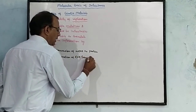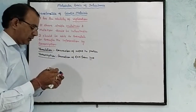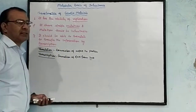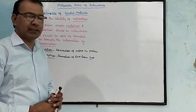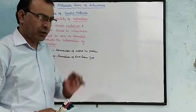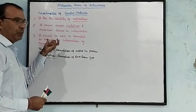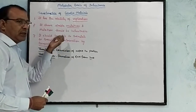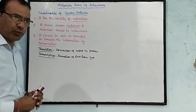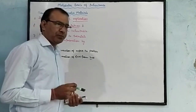Later we will discuss translation and transcription in more detail. To summarize, the characteristics of genetic material are: first, it must show stable mutation and those mutations must be inheritable; second, it must have the ability to replicate; and third, it must be able to express information, which is sent from one generation to the next through the transcription process.